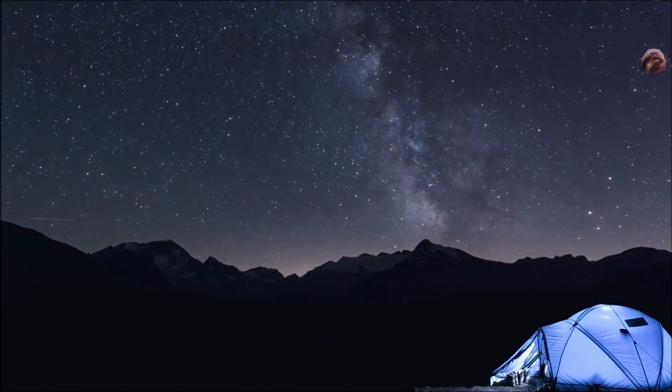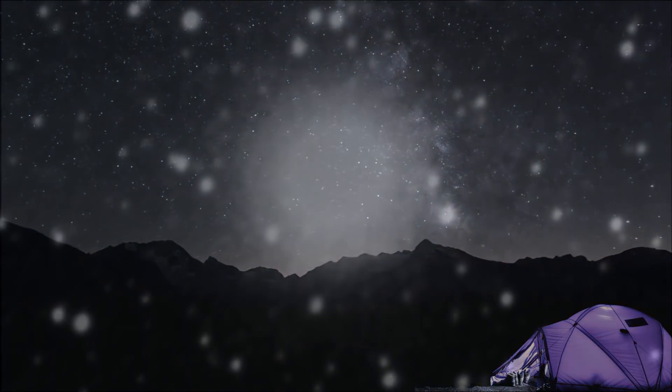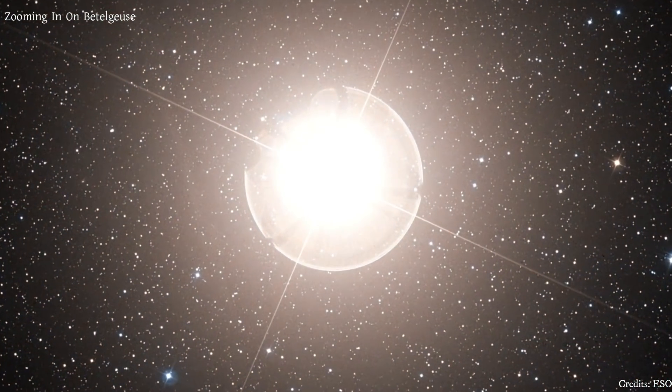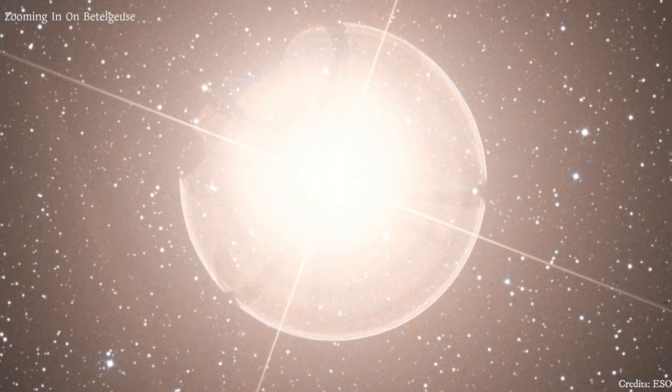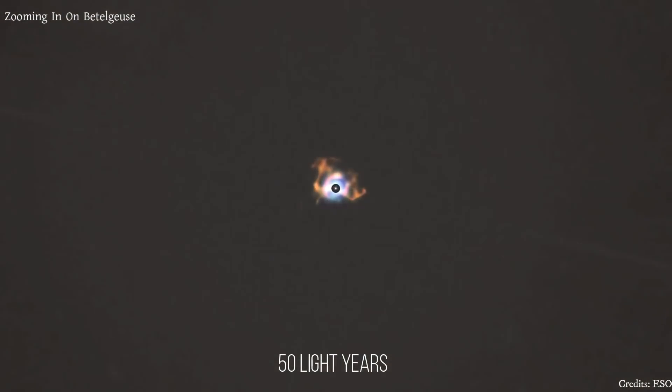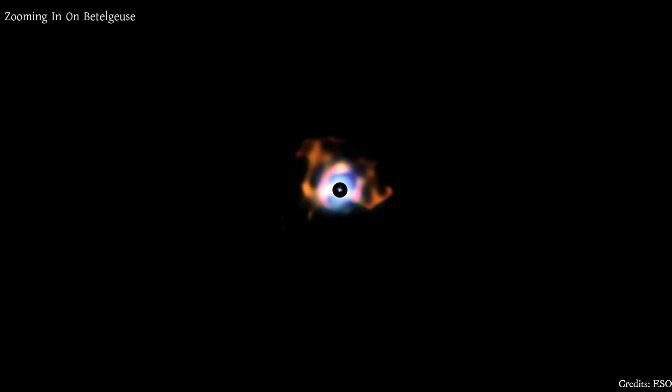But do not panic. It will not cause any harm to Earth even from this close distance. A supernova will only disrupt life on Earth if it occurs within 50 light years. There are no stars that close and about to explode.